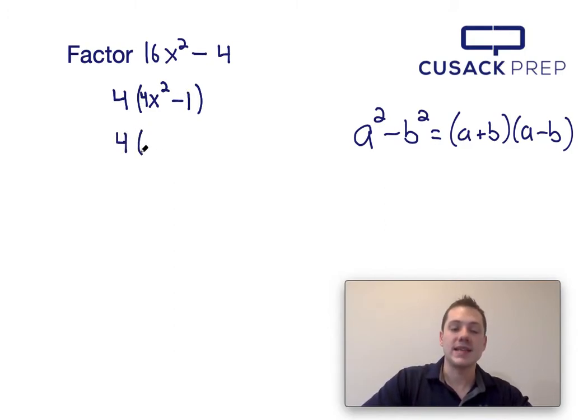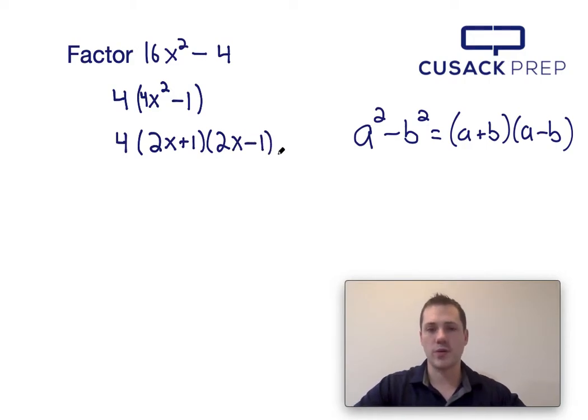Now I recognize that 4x squared minus 1 can be factored using the difference of squares, which is the formula I have written over here on the right hand side.